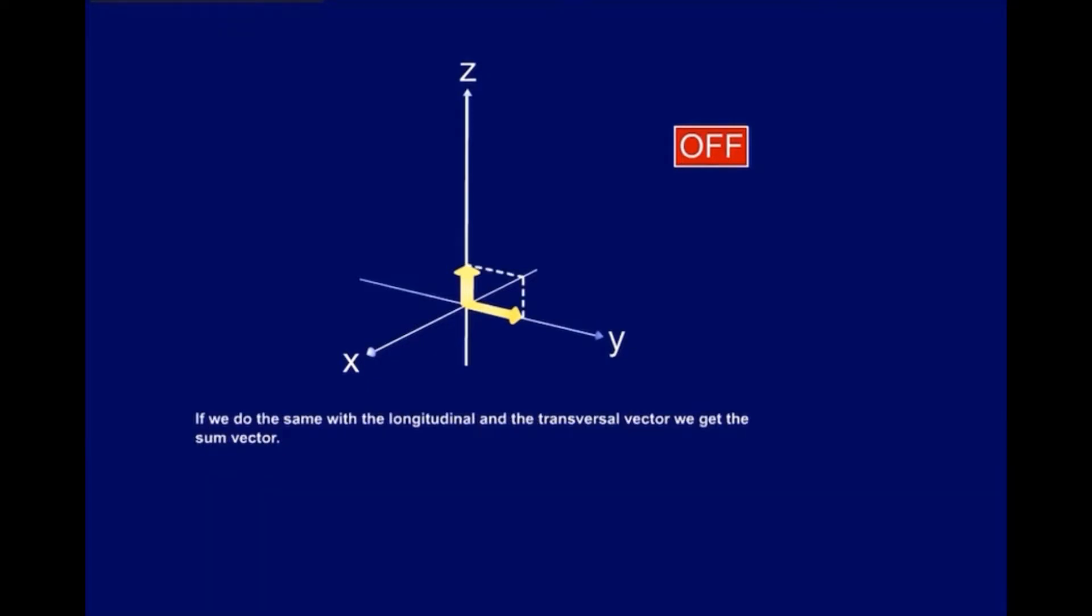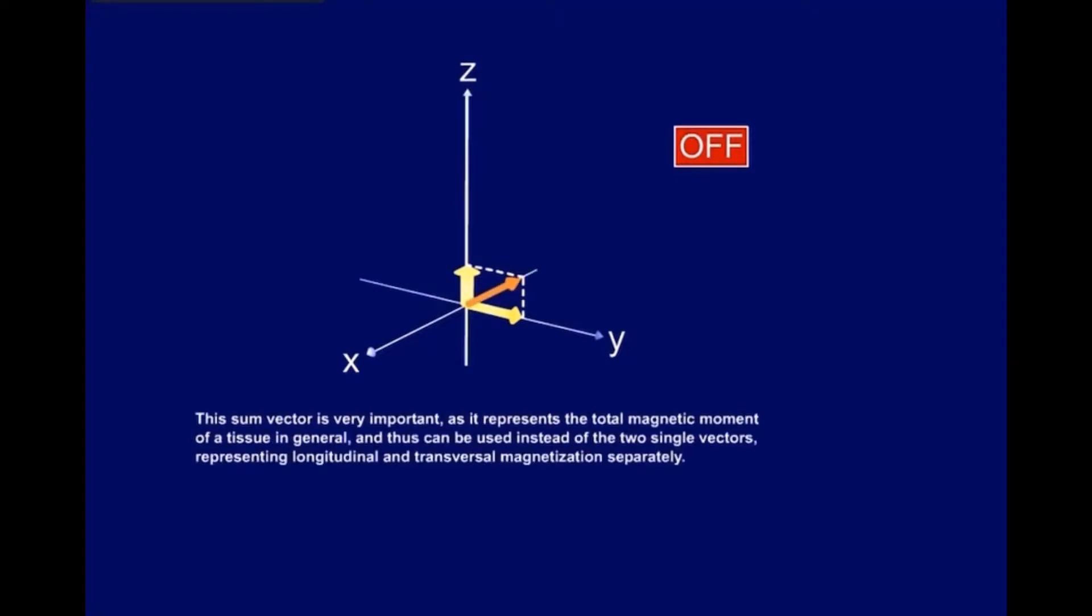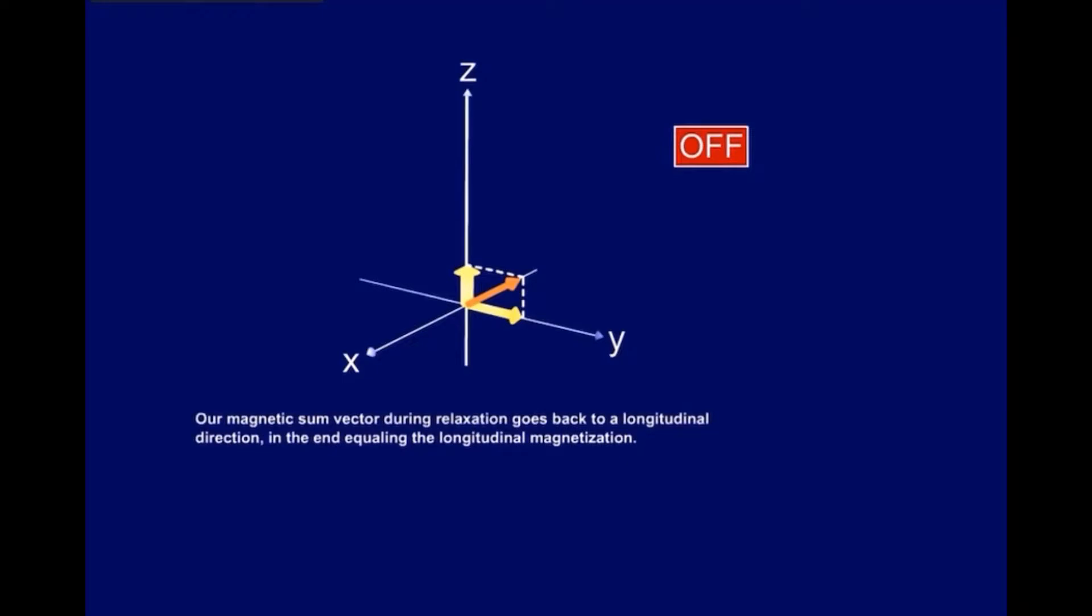If we do the same with the longitudinal and the transversal vector, we get the sum vector. This sum vector is very important, as it represents the total magnetic moment of a tissue in general, and thus can be used instead of the two single vectors, representing longitudinal and transversal magnetization separately. Our magnetic sum vector, during relaxation, goes back to a longitudinal direction, in the end equaling the longitudinal magnetization.